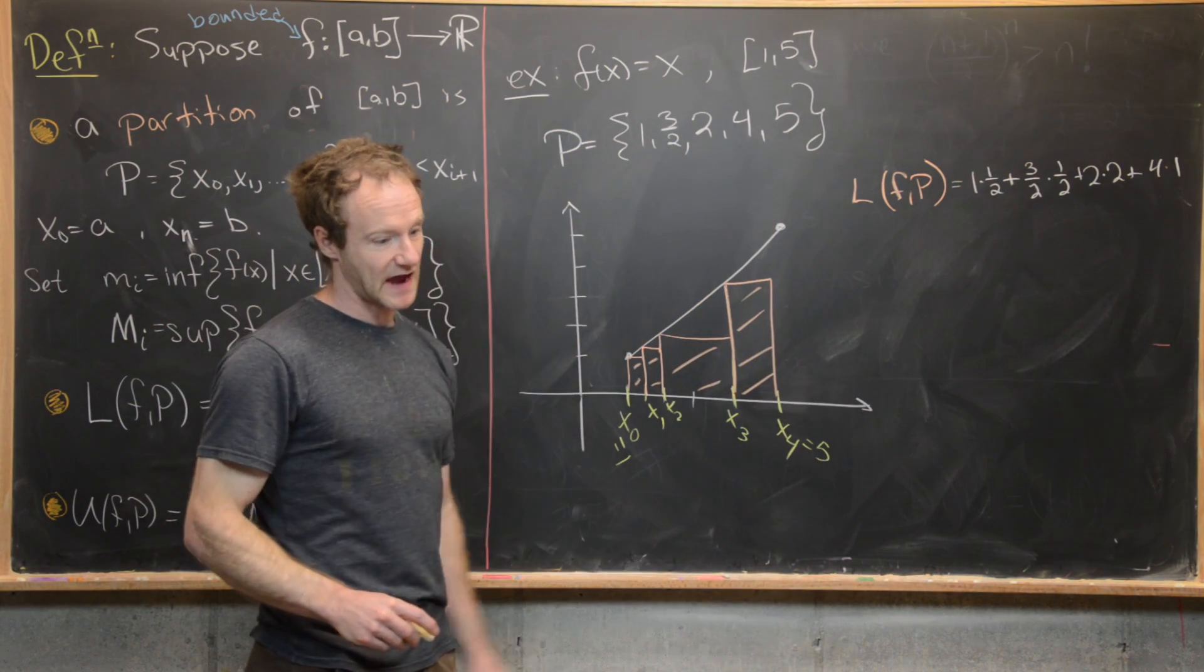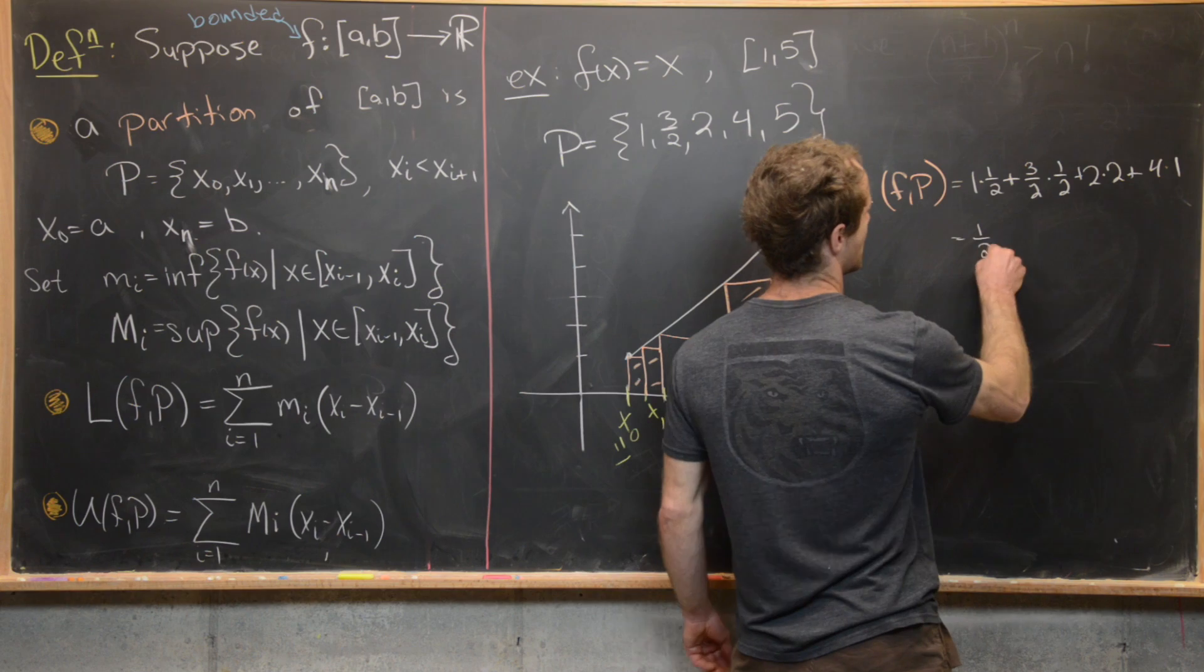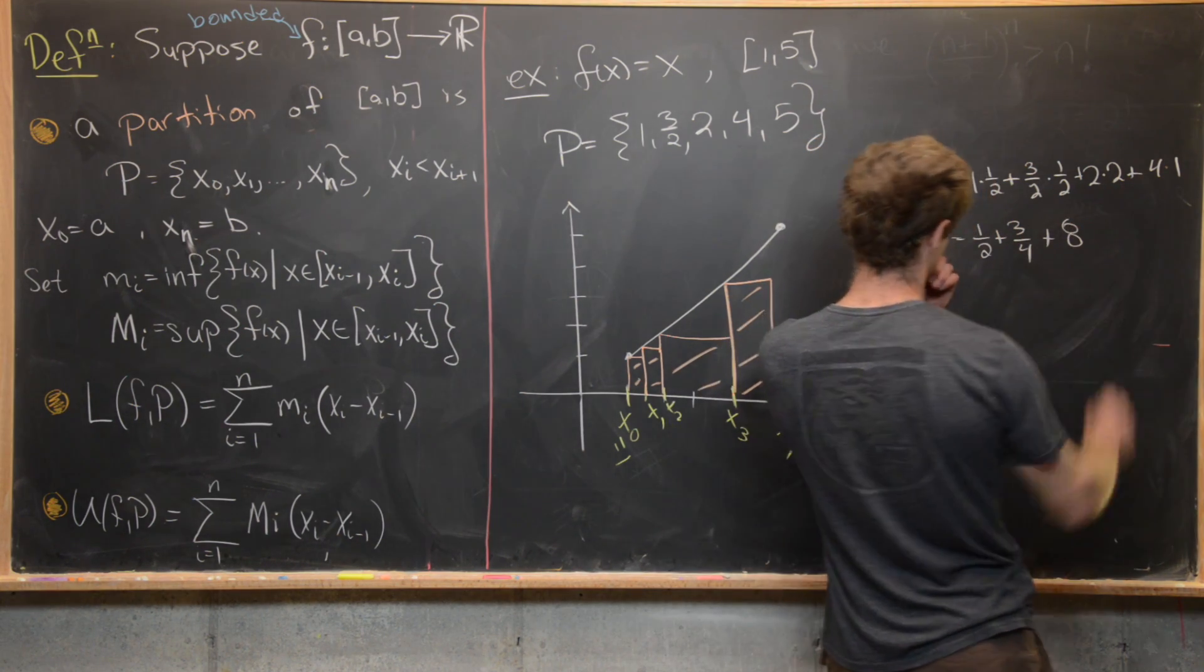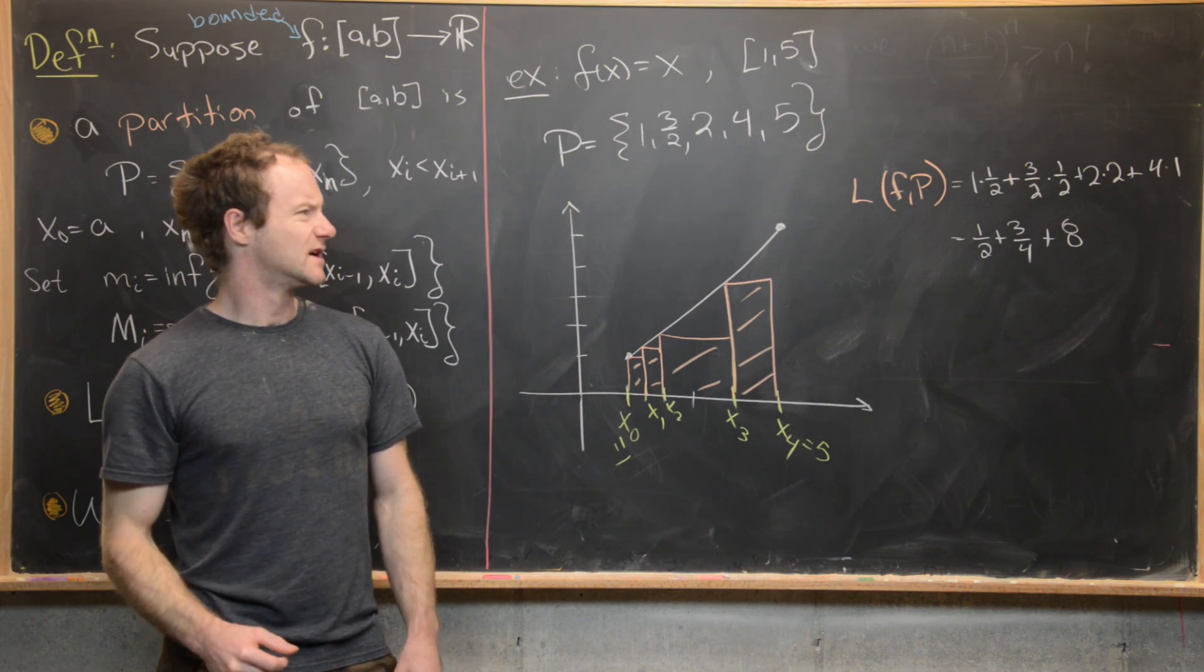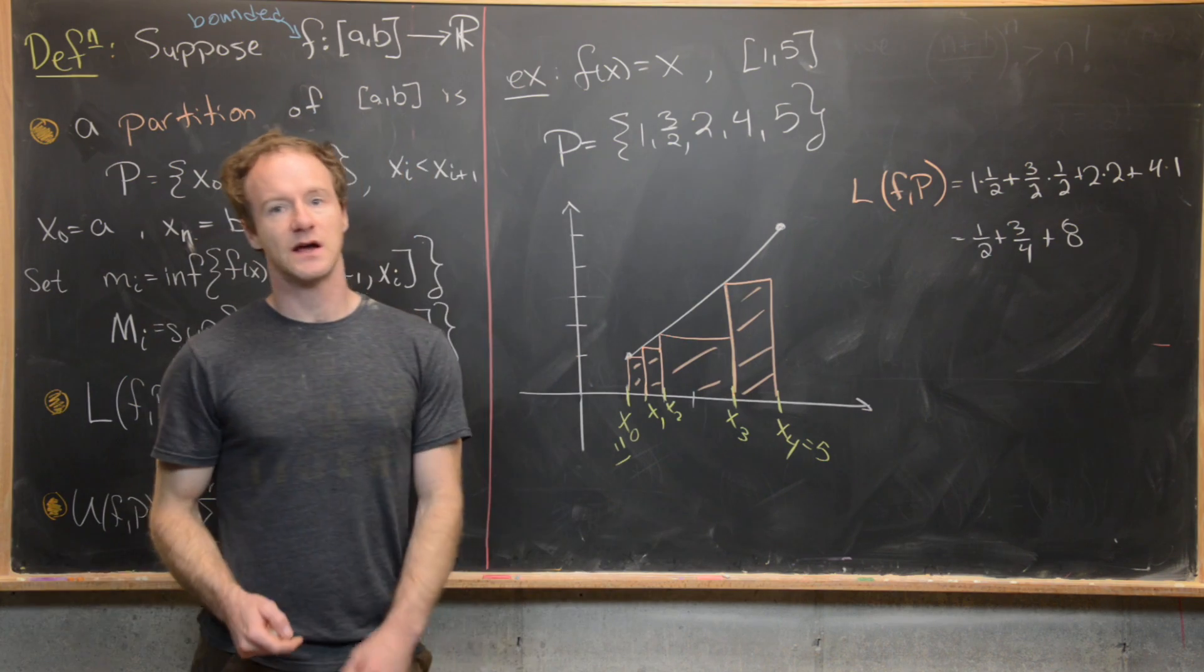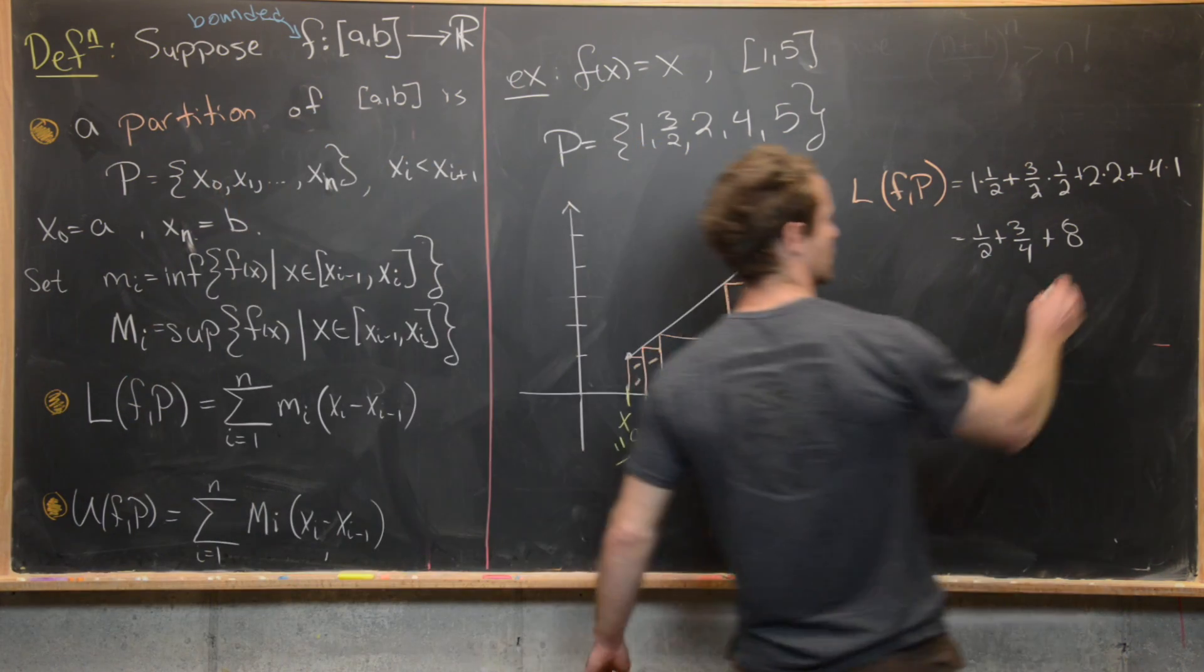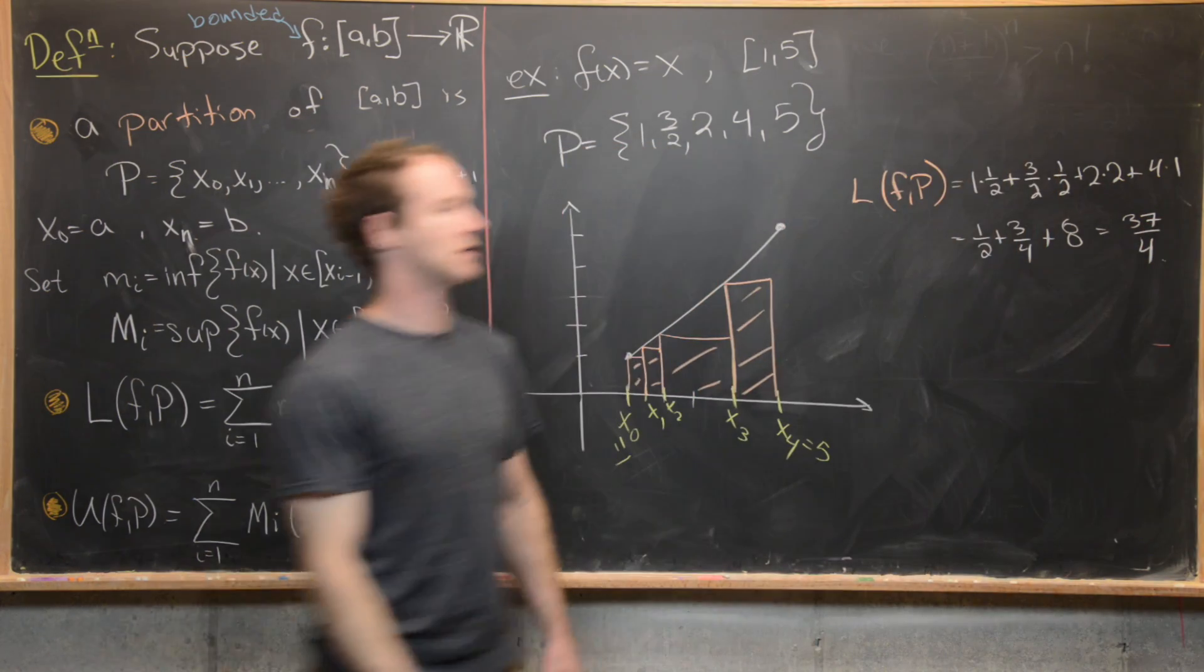So let's see what that gives us in the end. So that's going to give us 1/2 plus 3/4 plus 8. So 1/2 plus 3/4 is going to be something like 1 and a quarter plus 8 is going to be 9 and a quarter. But let's see. That's going to be equal to 37/4. So that's our lower sum.